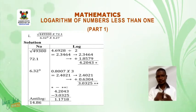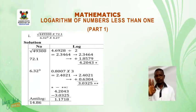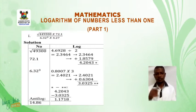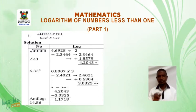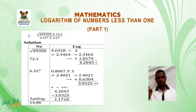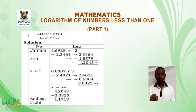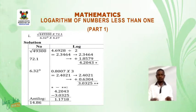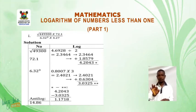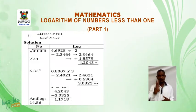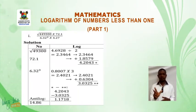Then the next number is 72.1. So from the log table, the log value of that is 1.8579. We now add the two log values. We add 2.3464 to 1.8579. This gives us 4.2043.